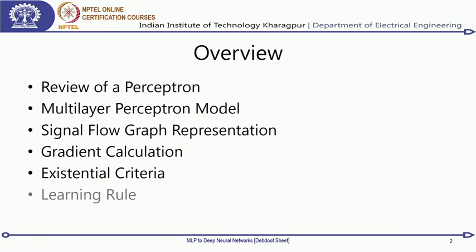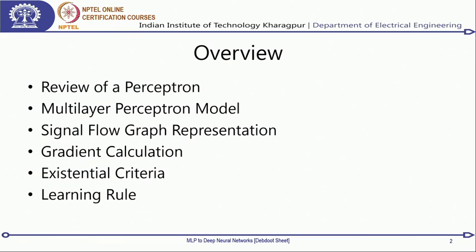We will do a basic review of the perceptron model and the perceptron learning rule, then enter into the multilayer perceptron. From there we enter into the signal flow graph representation — how input and output are related and what happens during learning. This is a critical part since in the last lecture you were introduced to error back propagation and gradient descent based learning.